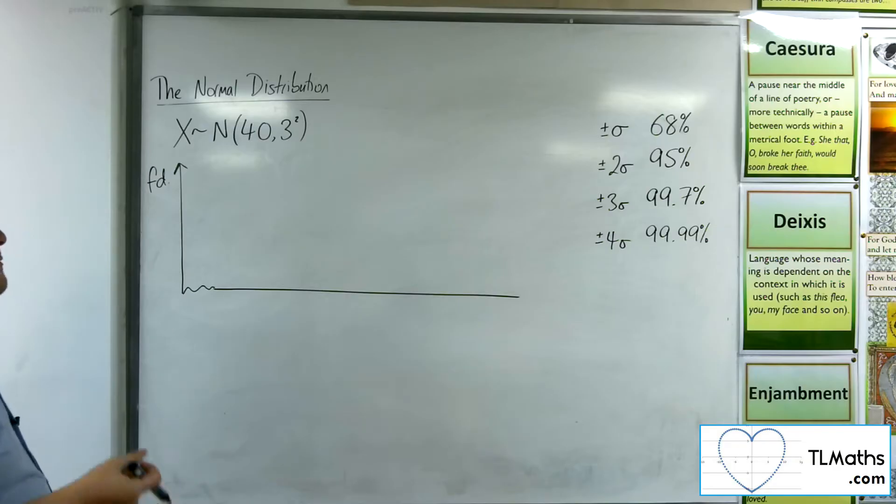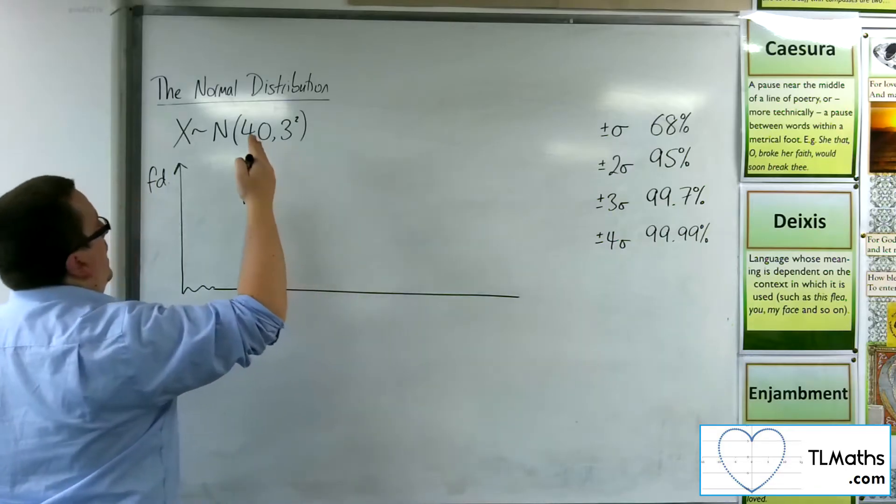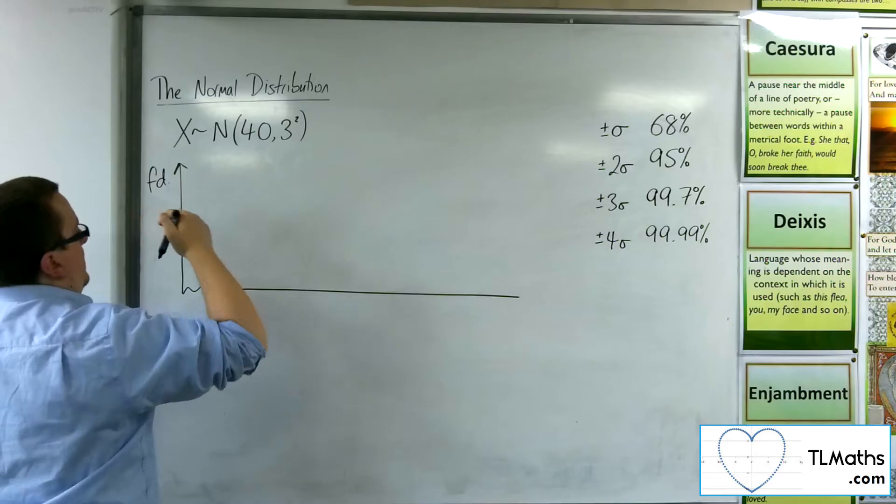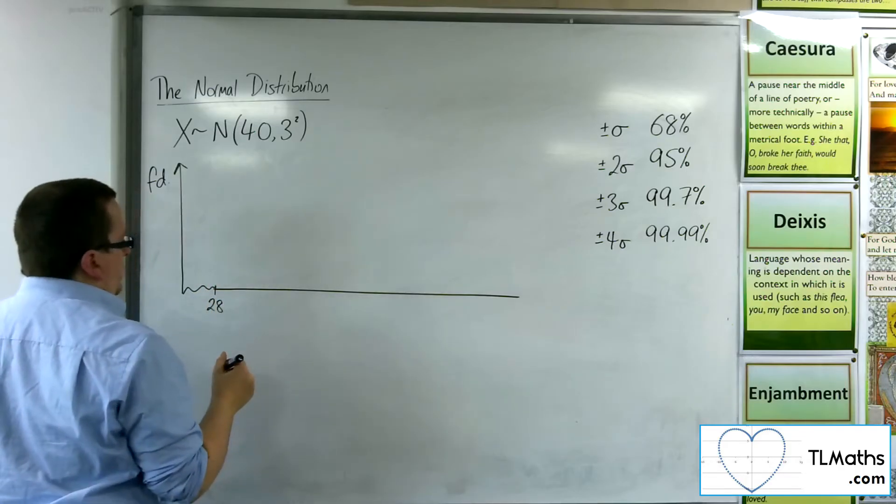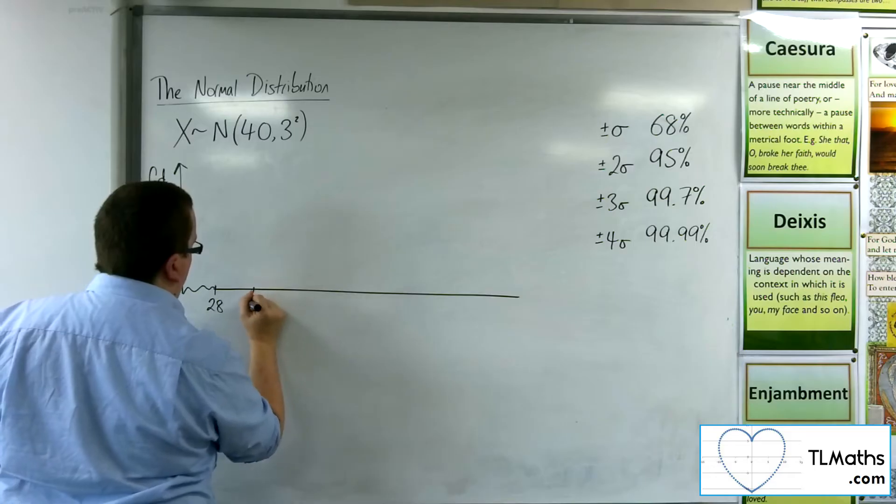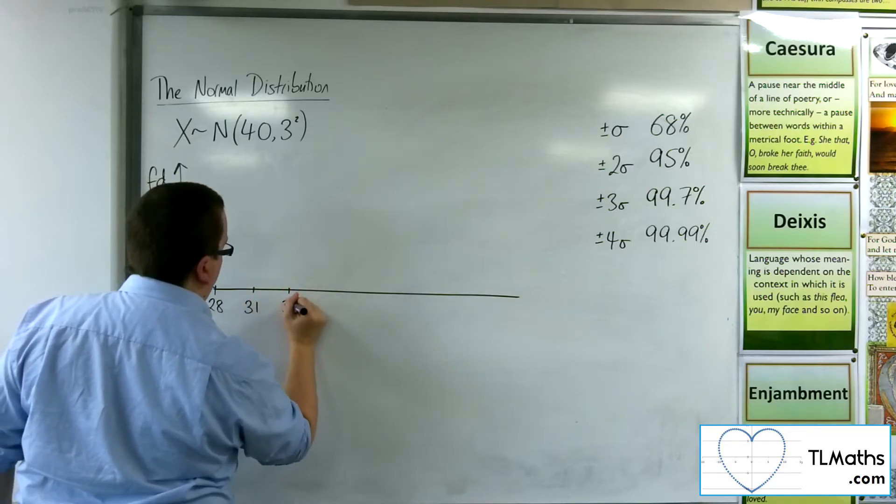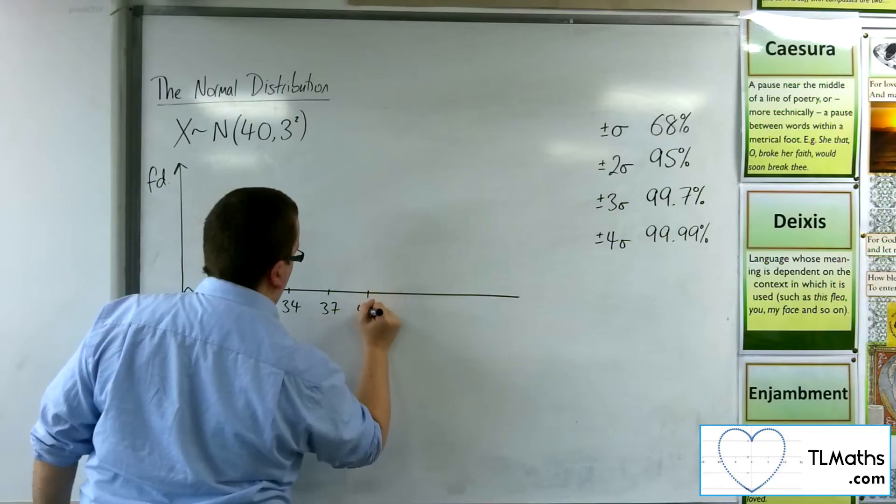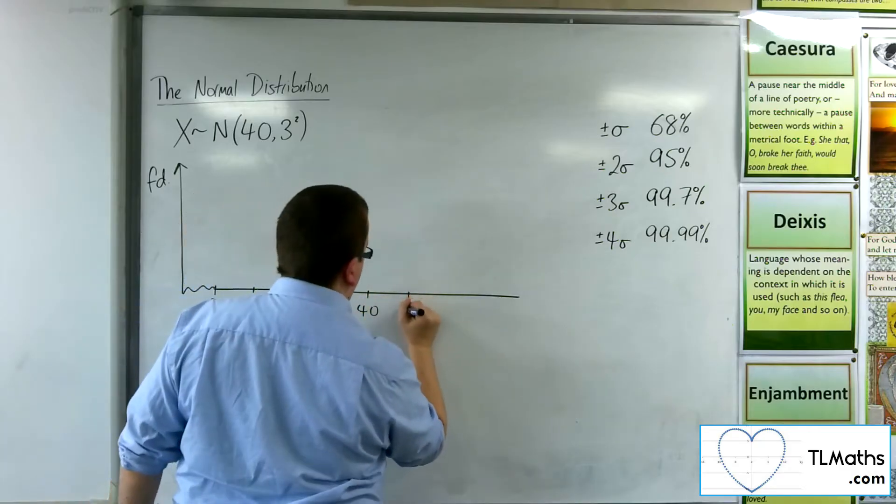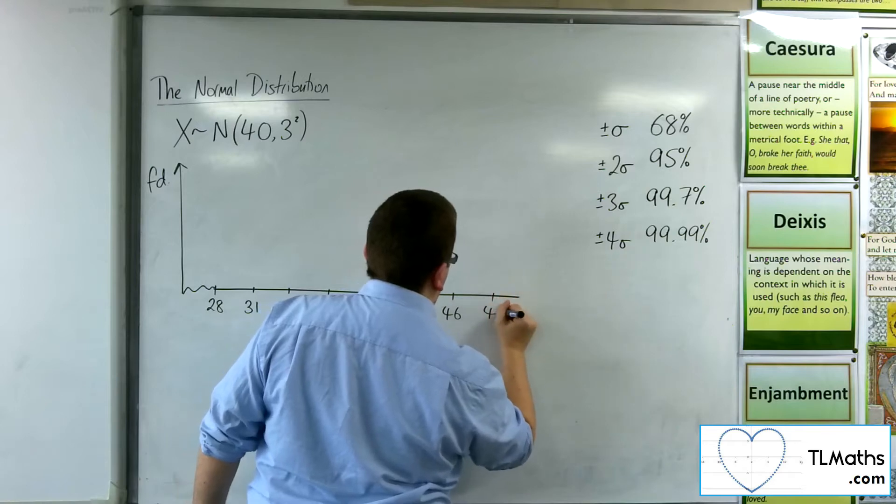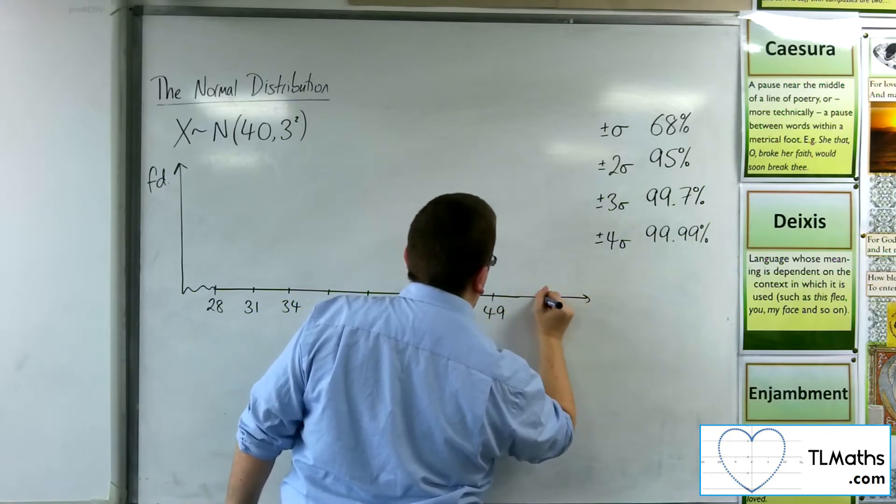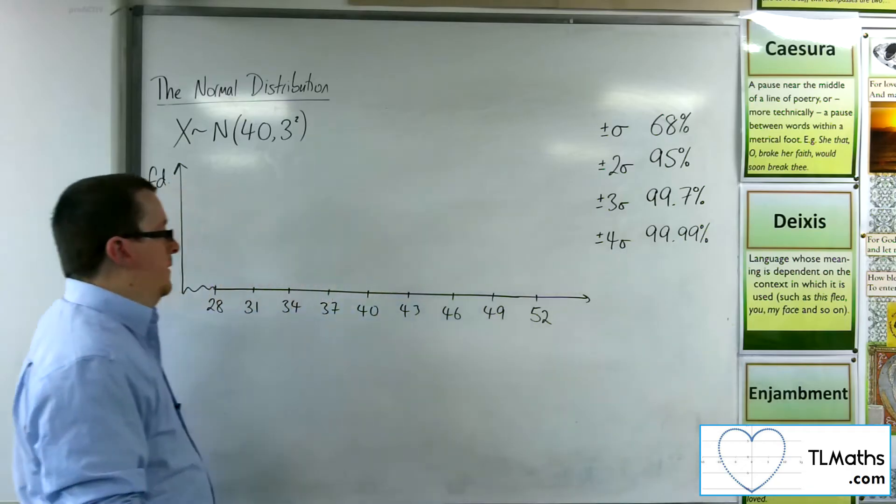So now I'm going to split it up into four standard deviations down. So that would be down to, down 12, wouldn't it? So, that would be at 28. So I'm going to go up in standard deviations.